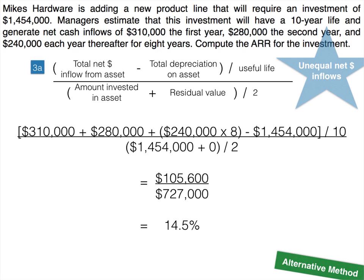Again, we end up with 14.5%. Even with no residual value, you still divide by two in the denominator because zero is still a number in the average. And again, we can't determine if this is a good investment without comparing it to the company's required rate of return.